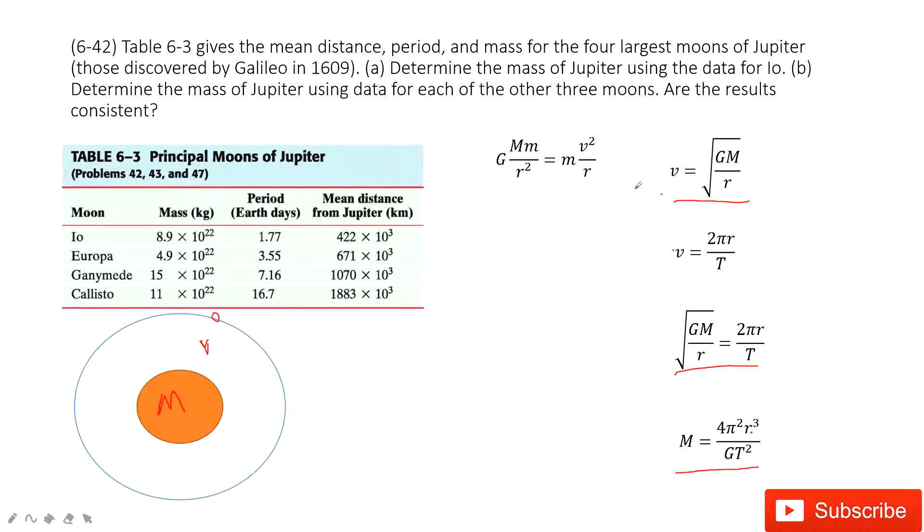So first one, ask you to find Jupiter's mass by considering the moon Io. So this moon Io, you just input the period and the distance, you can get the mass. And also second one asks, can you determine the mass of Jupiter by using some other three moons?